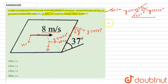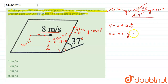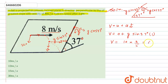To find the vertical velocity v, we use the first equation of motion: v = u + at. The initial velocity in this direction is zero, so v = 0 + g sin 37° × t. With g = 10 m/s² and sin 37° = 3/5, we get v = 10 × (3/5) × 1 = 6 meters per second.